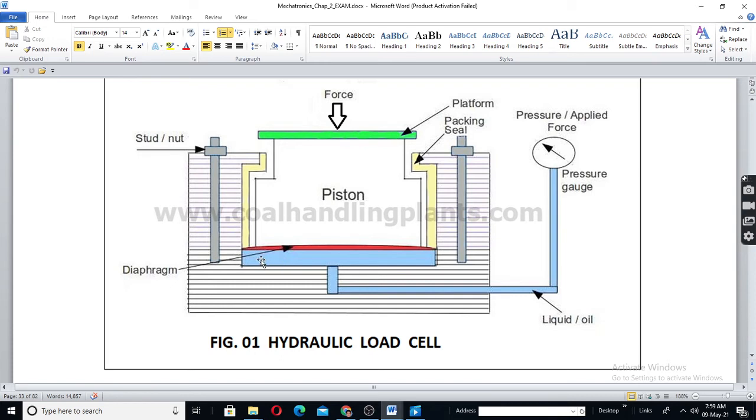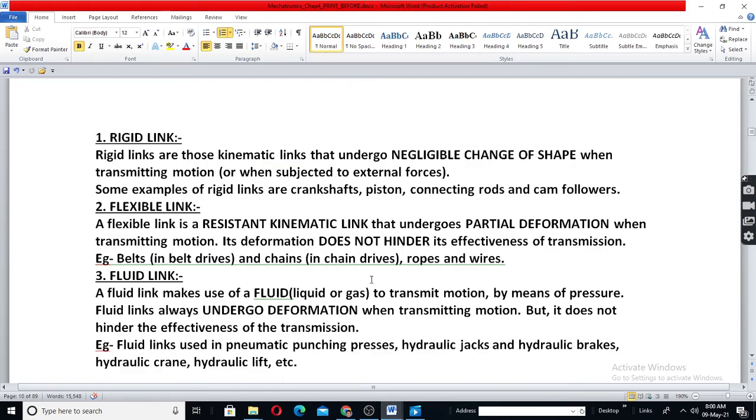You see here, since the liquid is confined, closed, within a particular volume, this acts as now a resistant body only. Even though it is liquid, it has now definite shape. Its shape is not at all altered because of the boundary. So this is called as a fluid link. Even gas also similarly. These three are the classification.